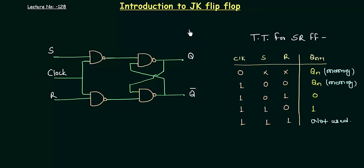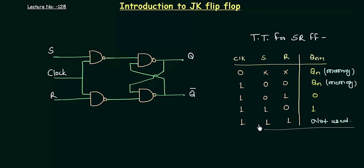In the D flip flop there is a single input D, called the data input, giving two possible combinations. In the SR flip flop there are two inputs and hence four possible combinations when the clock is high. It is always good to have four combinations compared to two. But there is one disadvantage: the last combination when S is 1 and R is 1 is a not-used state due to contradiction. In this presentation we will try to make a flip flop in which this 1,1 state is used in some usable form, and the flip flop obtained is called the JK flip flop.